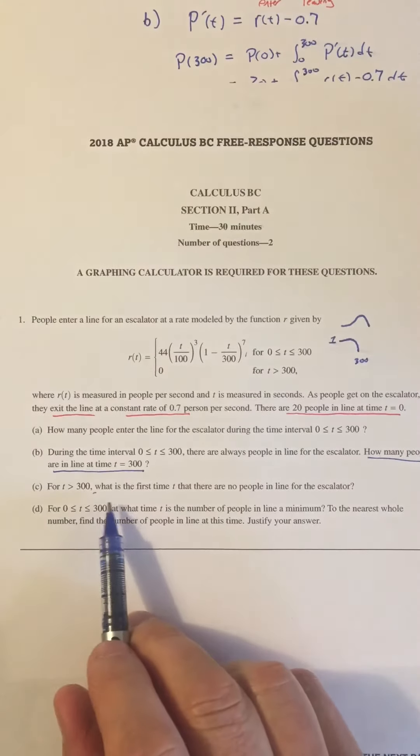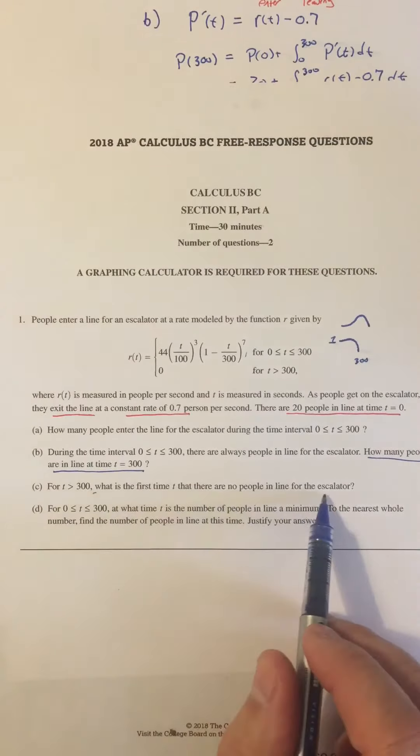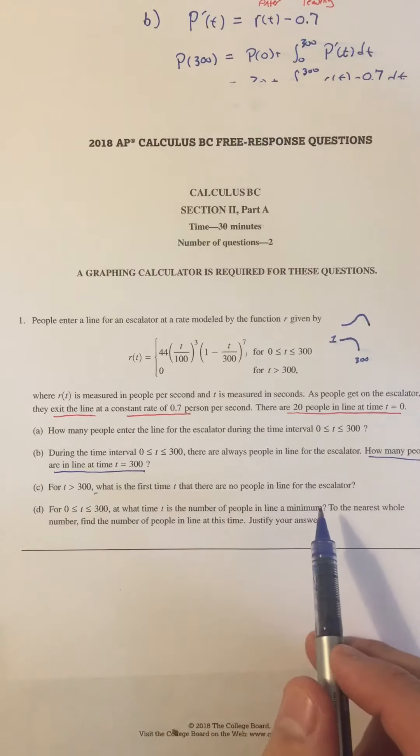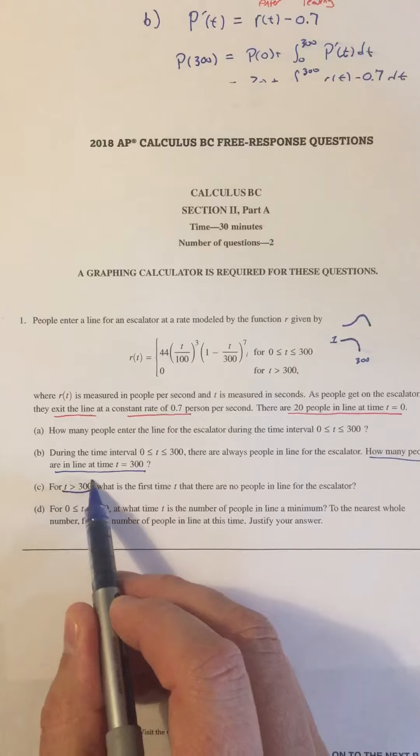So Part C asks, what is the first time that there are no people in line for the escalator? We want to know when the number of people gets down to zero, and it says for t greater than 300.